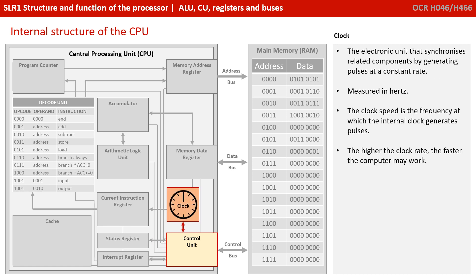The clock is a unit which synchronizes related components by generating pulses at a constant rate, and we measure this in what's known as hertz. A single hertz means one pulse per second. The clock speed is the frequency at which the internal clock generates these pulses. The higher the clock rate, the faster the computer may work. This is one of the main stats quoted when you buy a computer — for example, this PC has a 3.4 GHz processor, referring to the clock speed in hertz.